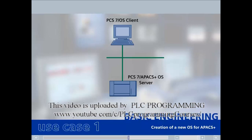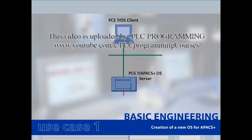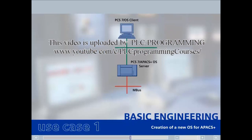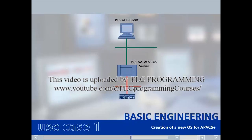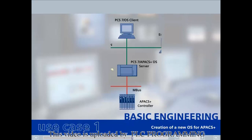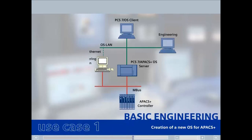The PCS7 Apex Plus OS server is connected with the system bus, the M-Bus, and therefore has access to the subsidiary Apex Plus controllers via the OS Ethernet network. The PCS7 OS clients are connected to the engineering system, and all engineering is done on the engineering system, from where the application software is downloaded to the server and the client.